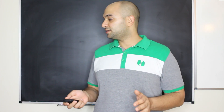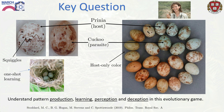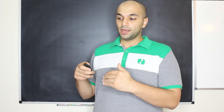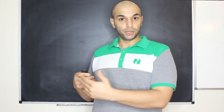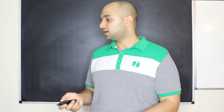This is also an interesting system to understand how pattern production happens, which is related to morphogenesis. It's interesting to study pattern learning, pattern perception, and pattern deception. This is an important problem that gives us insight into visual learning and how these things are processed in animals.